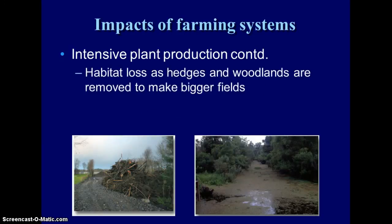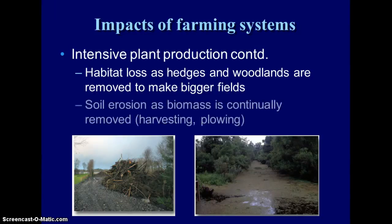Other downfalls: to produce enough food we have to clear land, so we're losing habitats as we're removing hedges and woodlands to make our fields larger and larger. Any time we remove vegetation, we are exposing the soil and increasing the amount of sediments that erode.